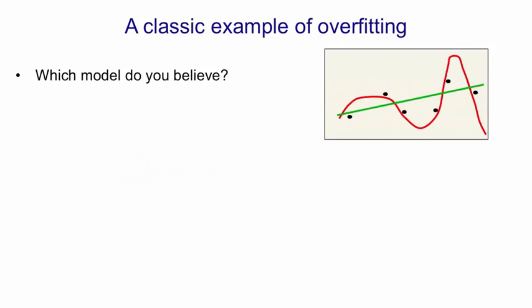So here's a classic example of overfitting. We've got six data points, and we fitted a fifth order polynomial, and so it should go exactly through the data, which it more or less does. We also fitted a straight line, which only has two degrees of freedom.